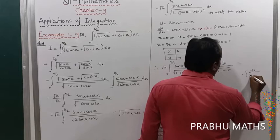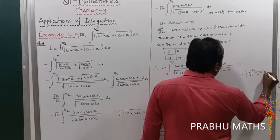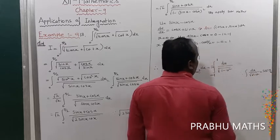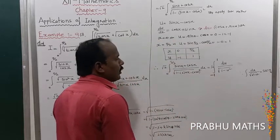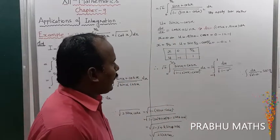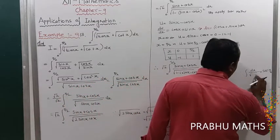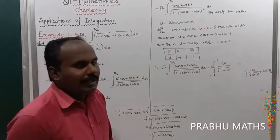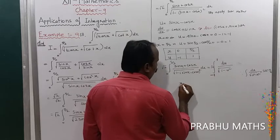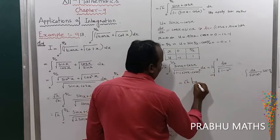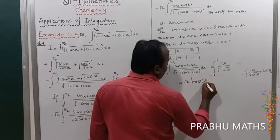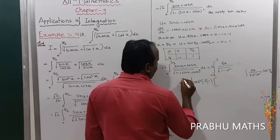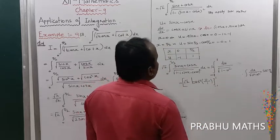We apply the standard formula: ∫ dx / √(a² − x²) = sin⁻¹(x/a). Here a = 1, x = u, so this becomes √2 · [sin⁻¹(u/1)] with limits from −1 to +1.